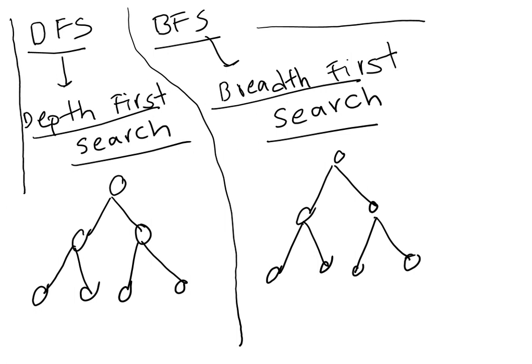In depth first search, we search the root first, then the left side. If it reaches the end, then it searches the right side of the root. Then it comes back to this side, then left and right. So depth first search means searching in a straight vertical line.